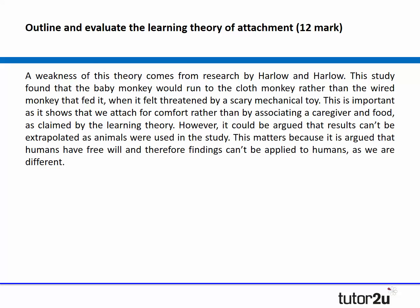Fortunately the answer continues. 'A weakness of the theory comes from research by Harlow and Harlow' — they've stated their point. 'This study found that baby monkeys would run to the cloth monkey rather than the wire monkey that fed it, when it felt threatened or scared by a mechanical toy.' That is one of the Harlow studies, so some good evaluation knowledge coming through. 'This is important as it shows we attach for comfort rather than by associating a caregiver with food, as claimed by the learning theory.' Not badly explained — that's a partially effective point. 'However, it could be argued that the results can't be extrapolated as animals were used in the study. This matters because it's argued that humans have free will and therefore findings can't be applied to humans as we're very different.' That's a very generic use of the word 'free will' — almost a separate point thrown in at the end and not particularly effective.